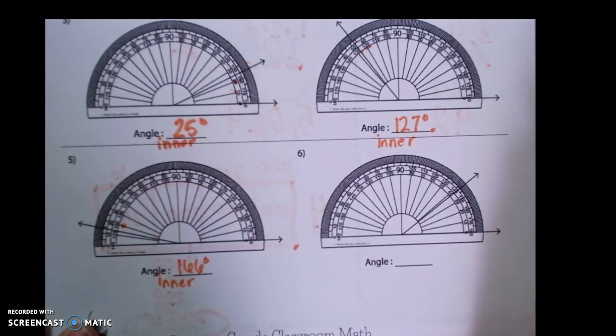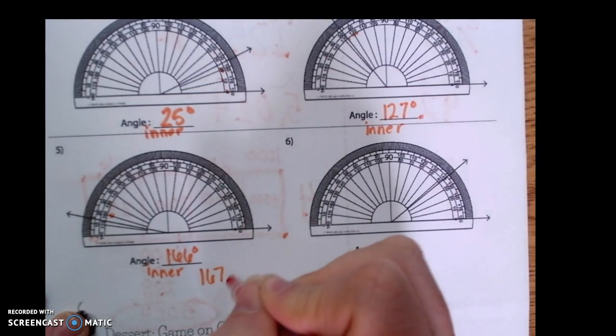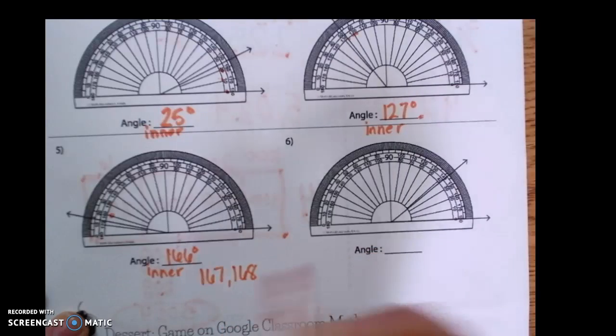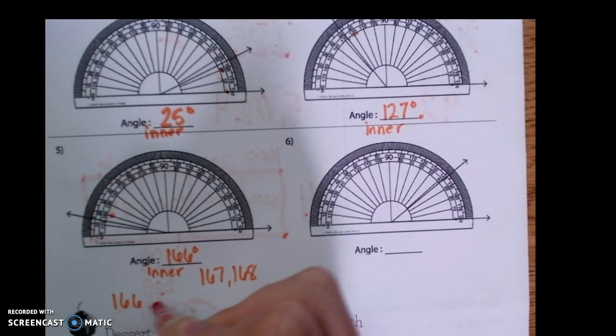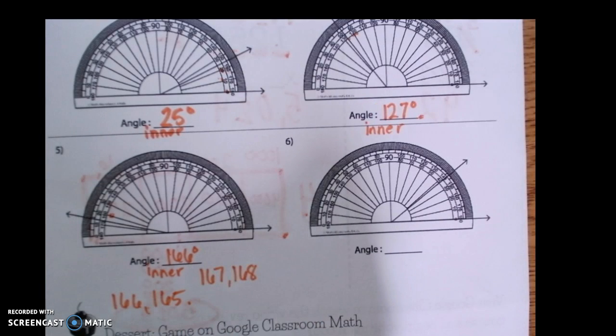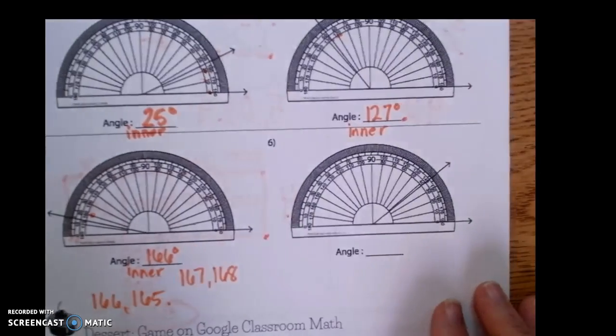Did you get anything close to that? So if you got 167, 168, or on this side, if you got 166 or 165, any of those would be okay. So you have a couple degrees on both sides.